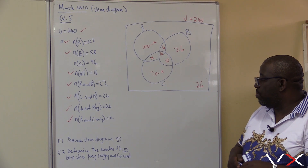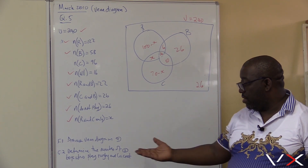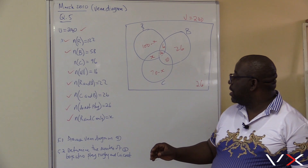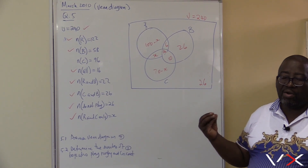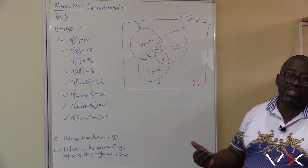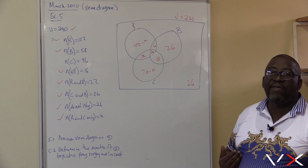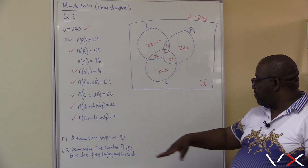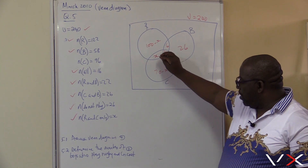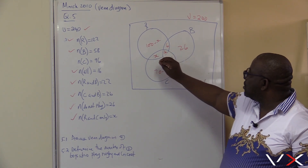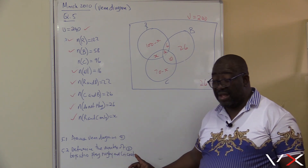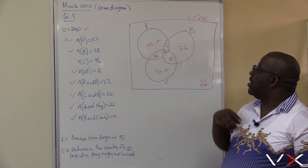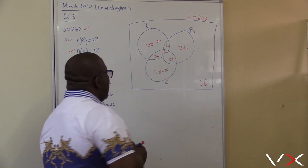The next question is: determine the number of boys who play rugby and cricket. Rugby and cricket — it's X. That's why we labeled rugby and cricket only as X. We're looking for X. How do we find the number of boys that play rugby and cricket? Those players are X plus 16. If the question said 'rugby and cricket only,' the answer would just be X, but since it says 'rugby and cricket,' we need to add 16 to whatever value of X we find.